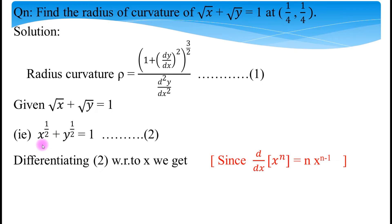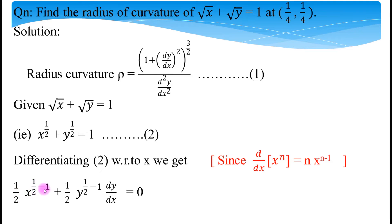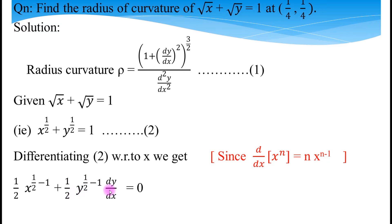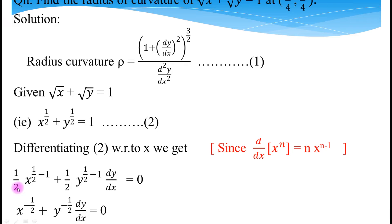The left-hand side contains two terms, so differentiate separately. The first term x^(1/2) is of the form x^n. We know d/dx(x^n) = n·x^(n-1). Here n = 1/2, so the derivative is (1/2)·x^(1/2 - 1). Then plus the derivative of the second term: (1/2)·y^(1/2 - 1)·(dy/dx) = 0, since the right-hand side is a constant.